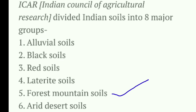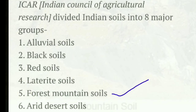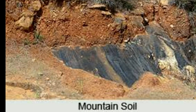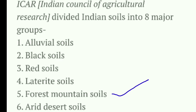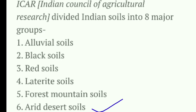Next is forest and mountain soil. This soil is mainly found in the Himalayan region and is formed due to the accumulation of organic matter from the forest ground. It is very suitable for tea plantation.